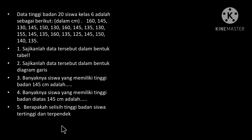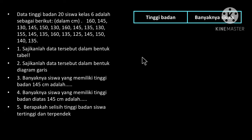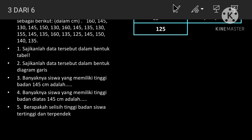Kita bahas satu per satu. Nomor satu, sajikan data tersebut dalam bentuk tabel. Maka tabelnya terdiri dari dua kolom, yaitu tinggi badan dan banyaknya siswa. Kita urutkan terlebih dahulu dari tinggi badan yang terpendek di sini, yaitu adalah 125.